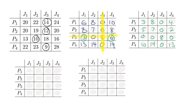Now we do the same thing as before: find the minimum number of lines required to cover all the zeros. Hopefully it's 4 and then we're ready to allocate. In this case we've drawn two lines, and again it's the same number as before — only 2 — so we're not ready to allocate.